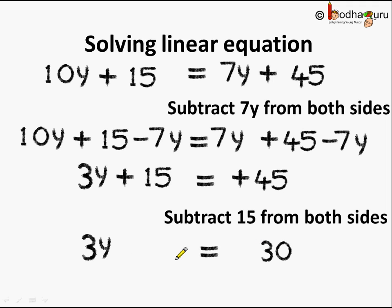3y is equal to 30. How do we get this? If we subtract 15 on the LHS, 15 and minus 15 cancel each other. So we are left with 3y. And on the RHS 45 minus 15 becomes 30. So the equation gets reduced to 3y equal to 30.